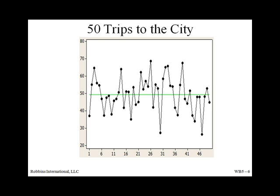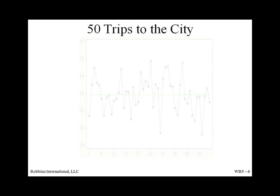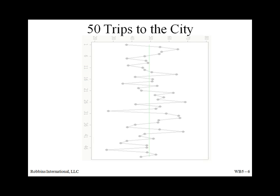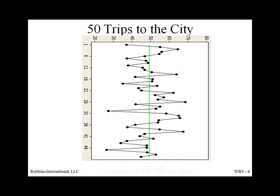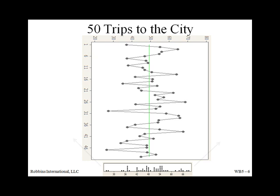Here are the last 50 trips to the city — there's certainly variation here. We've made these trips during different days of the week and times of the day. This is one way to view the data and look for variation. If we were to rotate this graph and shake the points so that they fell to the bottom, we'd have a dot plot and the beginnings of a histogram. Let's take a look.